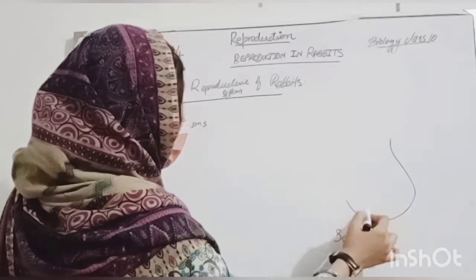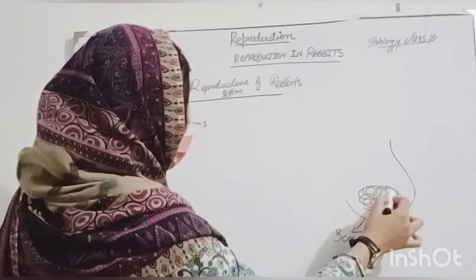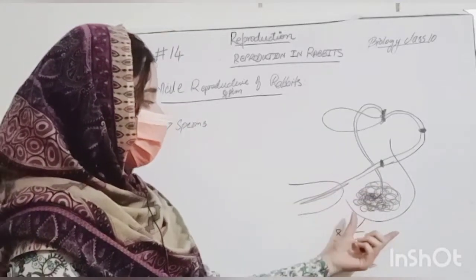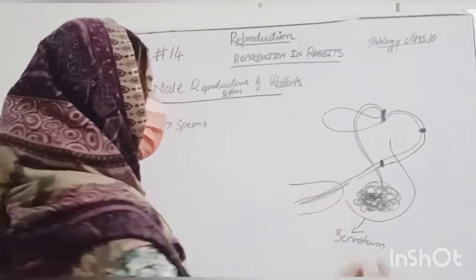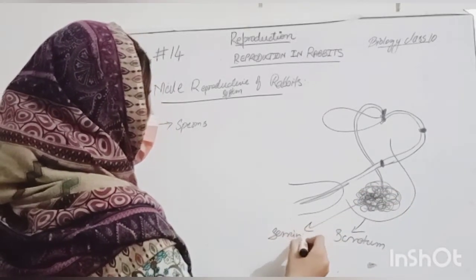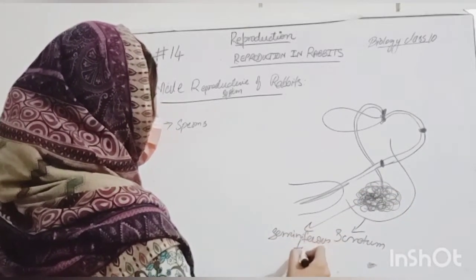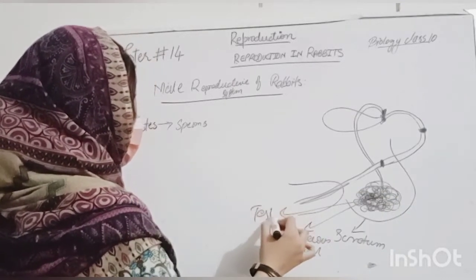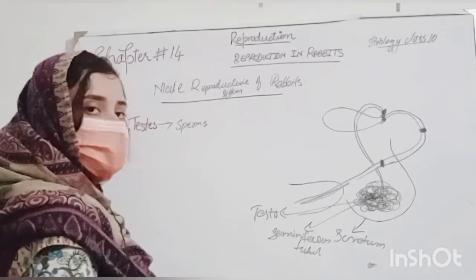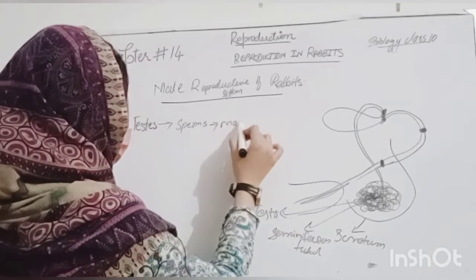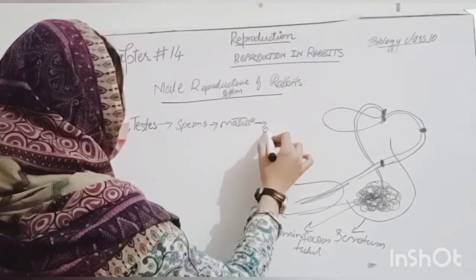In this scrotum, the semi-coiled tubules are present, we call it seminiferous tubules. These seminiferous tubules are produced by sperm. These sperm, when they are mature, they accumulate in the collecting tubules.